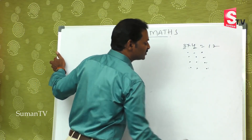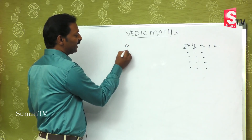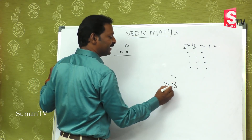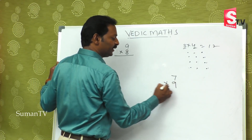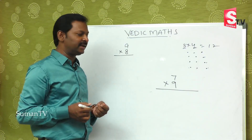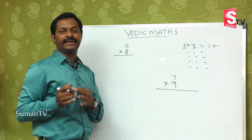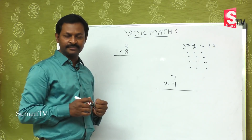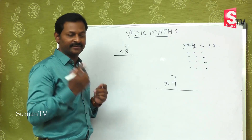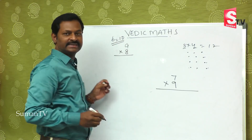First I will start with a small number. Suppose 9 is multiplied by 8, or 7 multiplied by 8. This is how we do it — let's try using tables. What number is close? These two numbers are close to ten, so here the base number is ten.